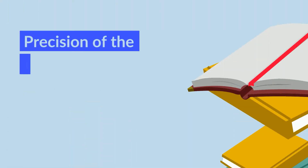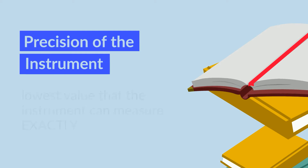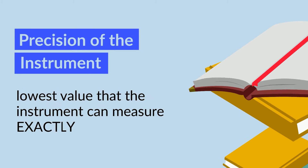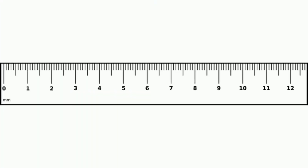The precision of the instrument is the lowest value that it can measure exactly. Let's take this ruler for example. What is the smallest measurement that it can measure exactly?